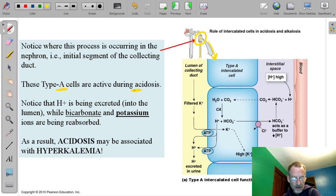And the big picture is that with acidosis, we want to get rid of the hydrogen. So hydrogen is being excreted into the lumen, while bicarbonate and potassium are being reabsorbed. We'll work through the figure in just a moment.